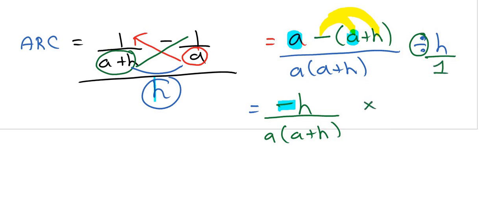I can change that to times and then flip this around to be 1 over h, and then those guys will cancel off. Now you're left with negative times 1 which is negative 1 all over a times a plus h. That's your final answer. That concludes this video on average rate of change.